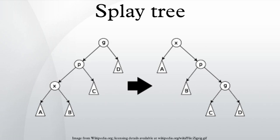All normal operations on a binary search tree are combined with one basic operation, called splaying. Splaying the tree for a certain element rearranges the tree so that the element is placed at the root of the tree.